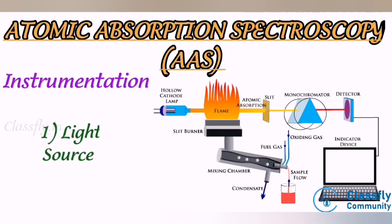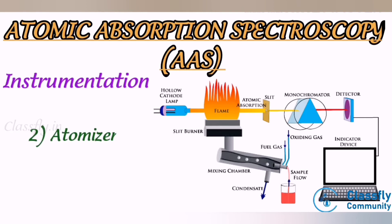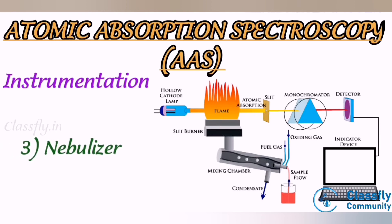Instrumentation. First, light source: hollow cathode lamps are the most common radiation sources in AAS, containing a tungsten anode and a hollow cylindrical cathode made of the element to be determined, sealed in a glass tube filled with inert gases; each element has its own unique lamp. Second, atomizer: elements to be analyzed need to be in an atomic state; atomization is the separation of particles into individual molecules and breaking those molecules into atoms, done by exposing the analyte to high temperature in a flame or graphite furnace.